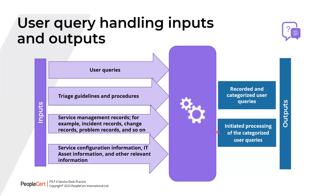From an input perspective, think about what information needs to be communicated to the service desk, where inputs come from, whether they are coming from other practices, and how those inputs help with query handling. In terms of outputs, consider what information is communicated by the service desk, where the outputs are going, which practices might use that output information, and what they use it for. That kind of thinking enables you to think from a value stream perspective, rather than just a process perspective.